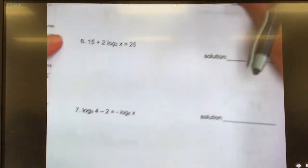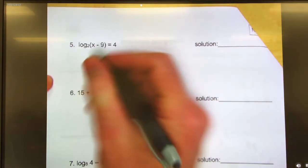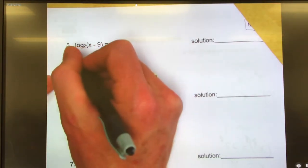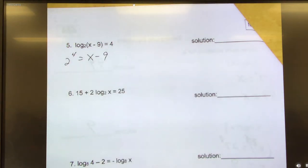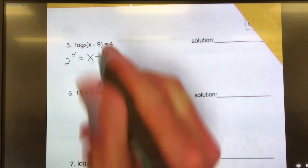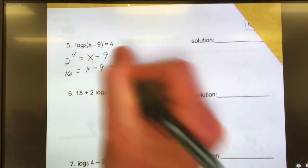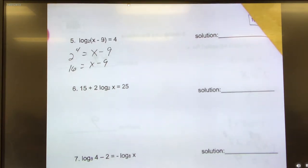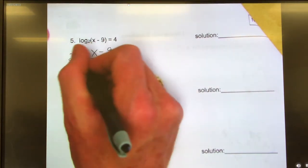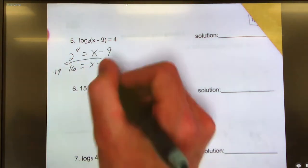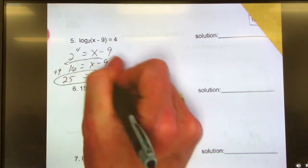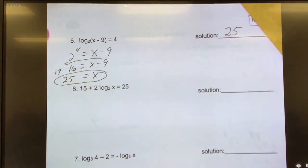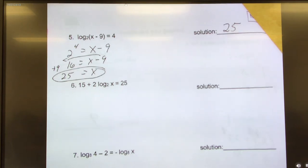Number 5. Too easy. Base is 2 raised to the 4th power equals x minus 9. What is 2 to the 4th power? 16. 16 equals x minus 9. Solving for x, what do I do? I add 9 to both sides. I'll move that 9 across and it becomes a plus 9. So x equals 16 plus 9 is 25.